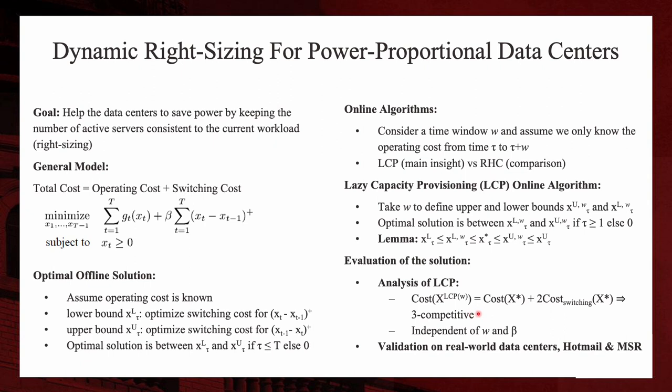So this theorem means that the cost of LCP algorithm is at most the cost of the optimal offline solution plus two times of the switching cost of the optimal offline solution, which means that the LCP algorithm is three competitive. The three competitive here means that the cost of the LCP solution is at most three times of the optimal offline solution. And the competitive ratio used here is the main measurement of the performance of the solutions.